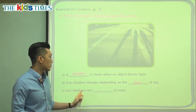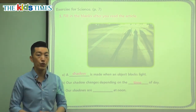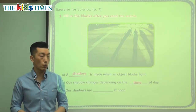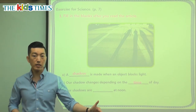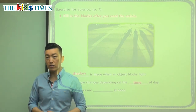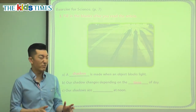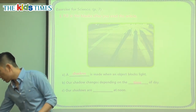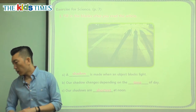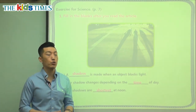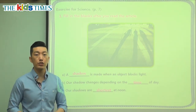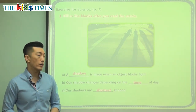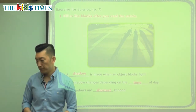It says our shadows are blank at noon — are they the longest at noon, or kind of in the middle? We talked about it in our article: our shadows are the shortest at noon, and noon is lunchtime, 12 p.m.